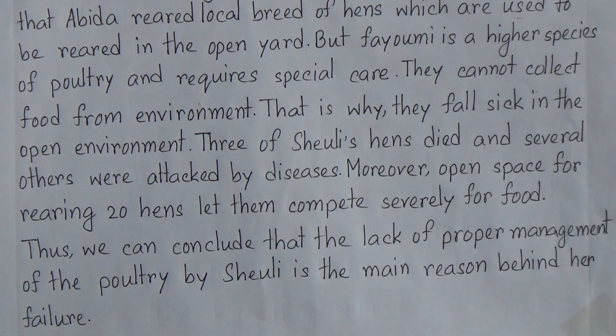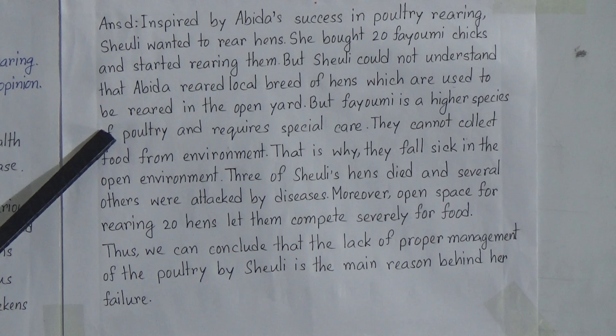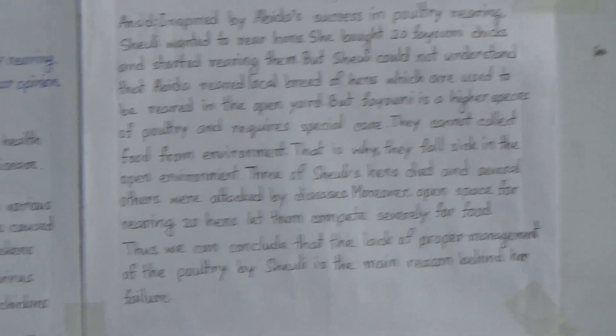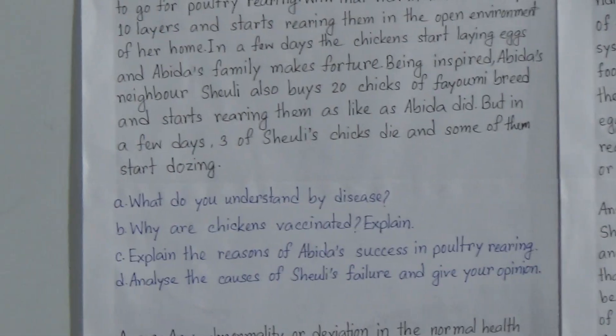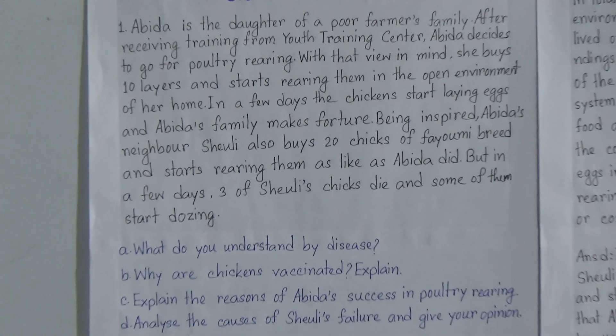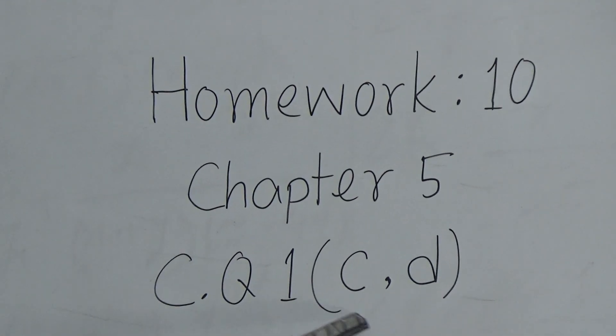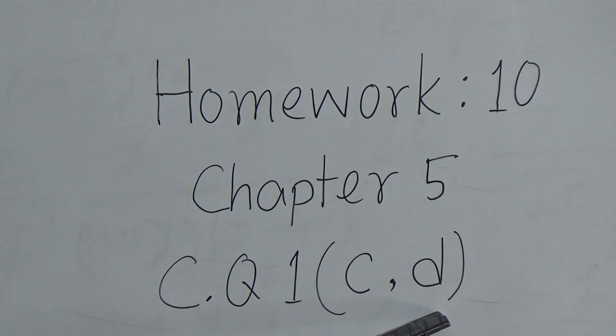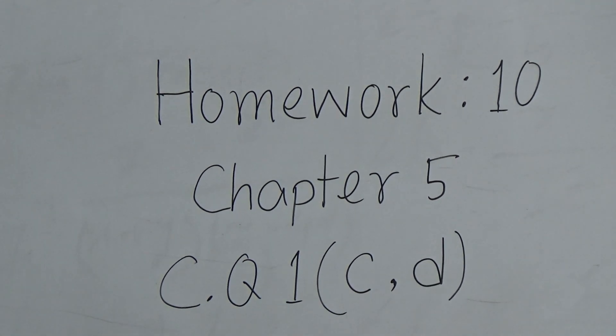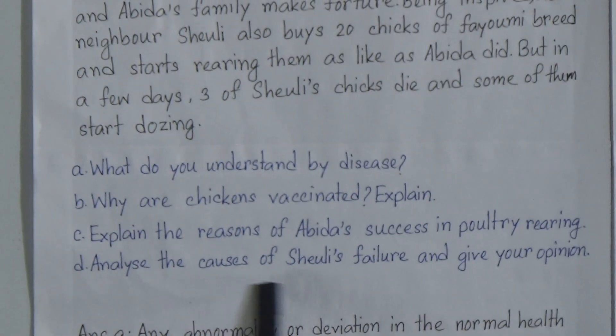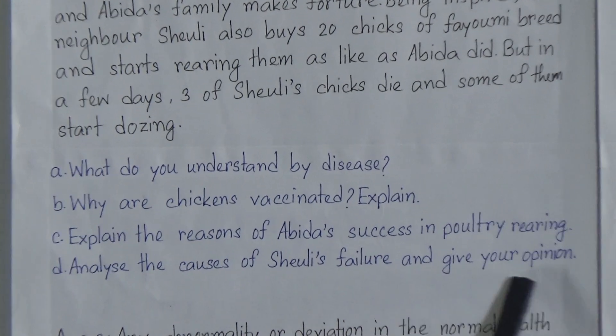So now, my dear students, here are the question answers for A, B, C, and D. You can follow this sample answer or you can also make the answer by yourself. There is a homework — homework number 10. You will do question number C and D as your homework: C, explain the reasons for Abhida's success in poultry rearing, and D, analyze the causes of Shirley's failure and give your opinion. These two question answers will be your homework.